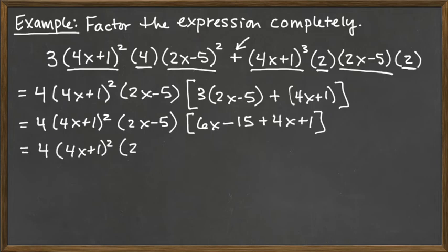We'll copy over the first factors that we had pulled out as our greatest common factor, and we'll gather our like terms here in this last factor that is in square brackets. We've got a 6x plus a 4x. Altogether that would be 10x, and then we've got minus 15 plus 1, so together that would be minus 14.